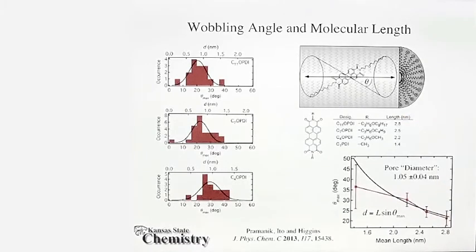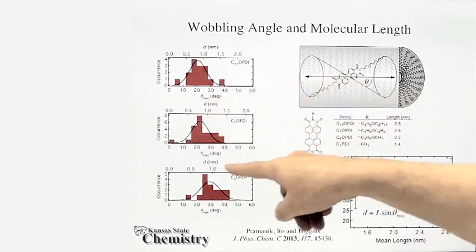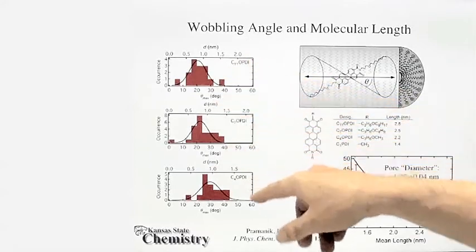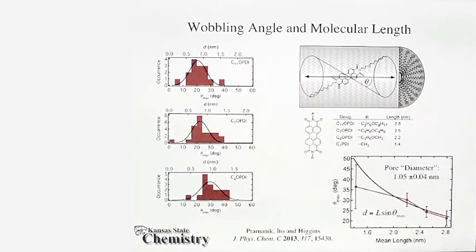These histograms on the left show the distributions of maximum wobbling angles in each case. Using the model given down here, we can determine the accessible cavity diameters for each single molecule.